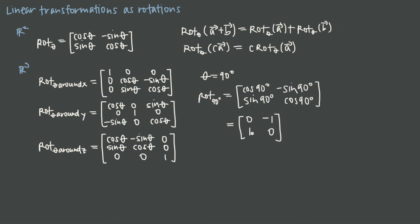We're using this to produce the same kind of transformation matrix we've been using previously. Now that we have it, let's apply it to the vector (1, 2). Performing the matrix multiplication gives us negative 2 in the first entry and 1 in the second, so the vector (1, 2) rotated 90 degrees becomes the vector (-2, 1).